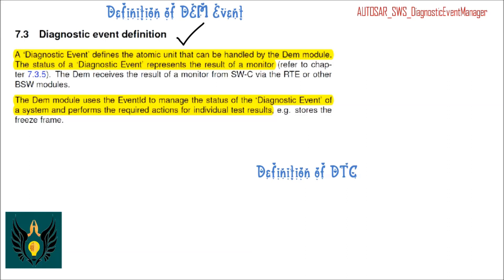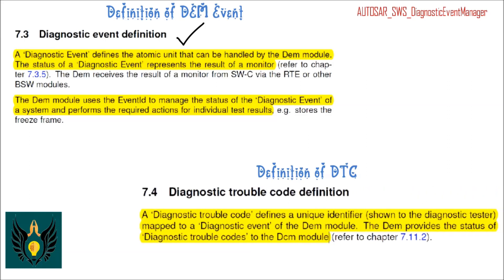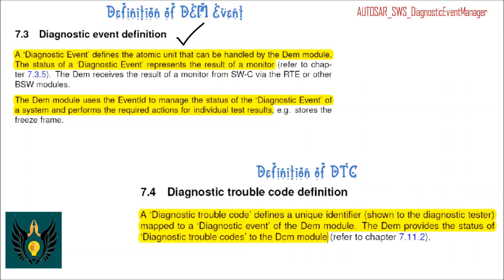Now let us see the definition of DTC. A diagnostic trouble code, or DTC, defines a unique identifier which is shown to the diagnostic tester, mapped to a diagnostic event of the DEM module.